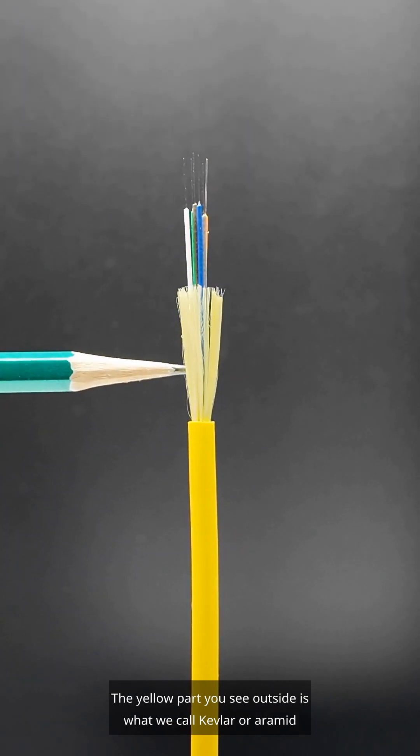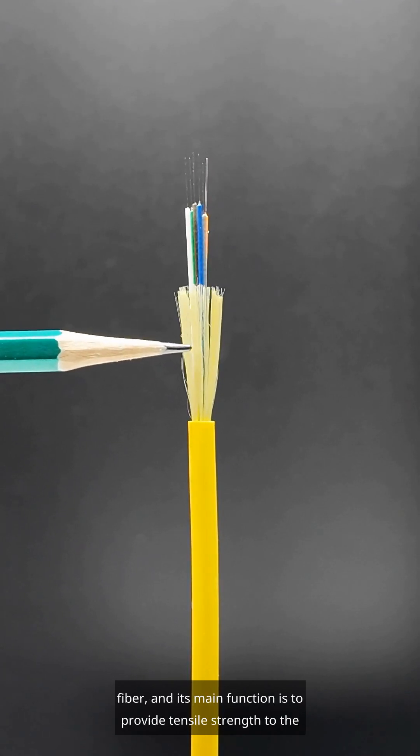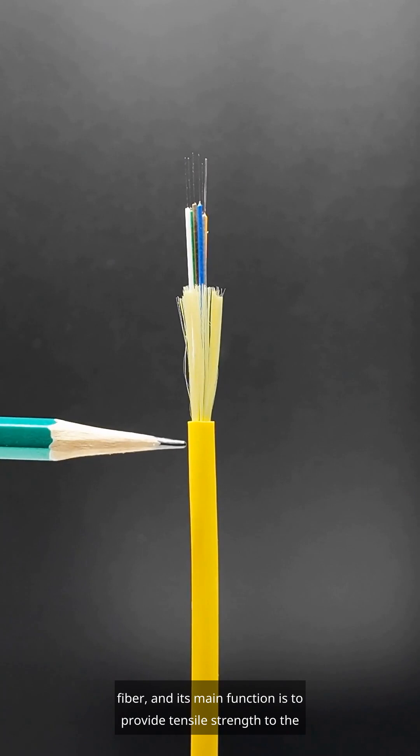The yellow part you see outside is what we call Kevlar, or aramid fiber, and its main function is to provide tensile strength to the optical cable.